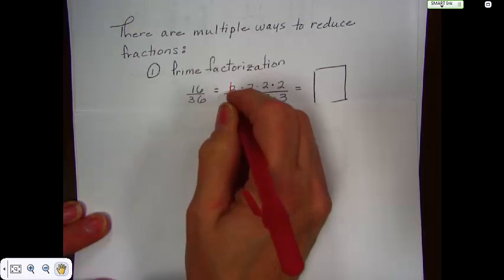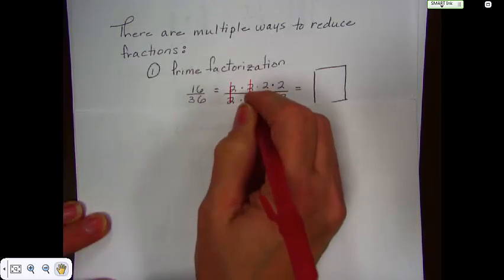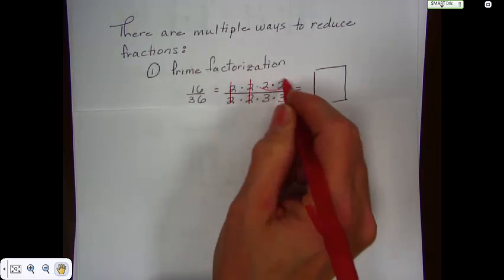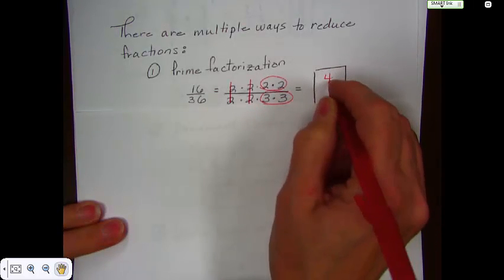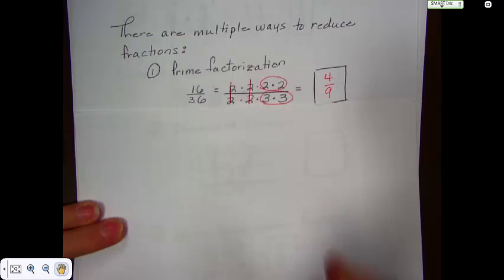There's a 2 in the top, 2 in the bottom, 2 in the top, 2 in the bottom. What you're left with is 2 times 2 over 3 times 3, or 4 over 9, and that's reduced form.